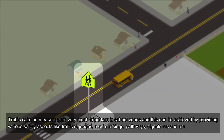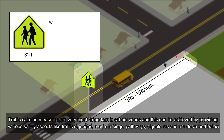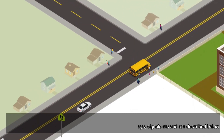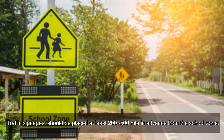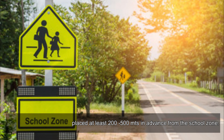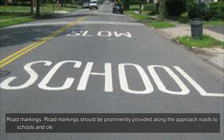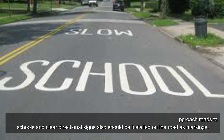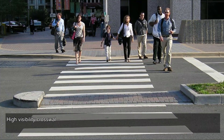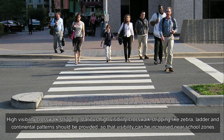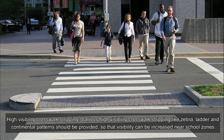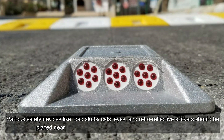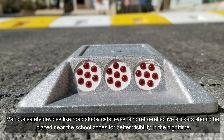Traffic calming measures in school zones: traffic calming measures are very important in school zones and can be achieved by providing various safety aspects like traffic signages, road markings, pathways, and signals. Traffic signages should be placed at least 200 to 500 meters in advance from the school zone. Road markings should be prominently provided along the approach roads to schools with clear directional signs. High visibility crosswalk striping such as zebra, ladder, and continental patterns should be provided to increase visibility. Various safety devices like road studs, cat's eyes, and retro-reflective stickers should be placed near school zones for better visibility at night.